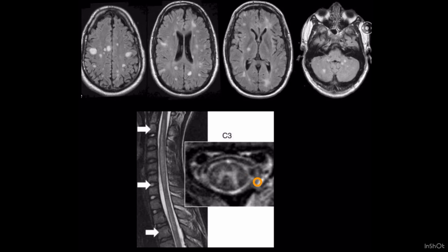This salient feature distinguishes this disease from other spinal cord diseases like transverse myelitis and multiple sclerosis. This type of characteristic pattern is not seen in those diseases.